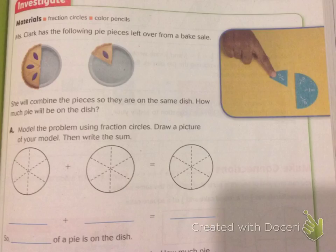Let's take this word problem. Ms. Clark has the following pie pieces left over from a bake sale. She will combine the pieces so they are in the same dish. How much pie will be on the dish? I see a few key words here. So let's look at the picture we have. I see three out of what looks like six pieces missing. And then I see on our other plate she has one pie piece. And the problem is saying she is going to combine. And I know the word combine means put together. So I think we are going to do an adding operation.